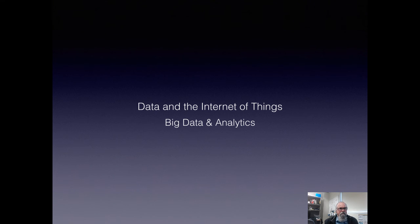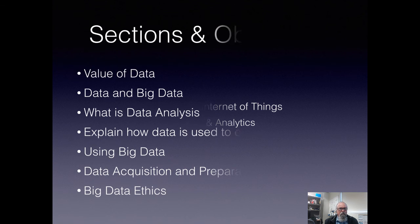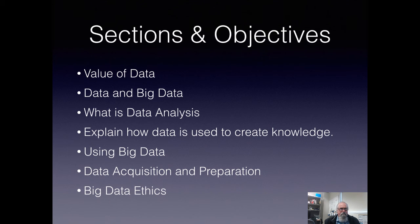Let's have a look at data and the Internet of Things. This is big data and the analytics that go with it. This is a huge area that we're only going to just touch on. In fact, we at Curtin have two courses: an undergraduate degree in data science and another postgraduate degree in data analytics and predictive analysis. We're going to look at the value of data, what makes up big data, how we analyze it, how data is used to create knowledge, and the acquisition, preparation, and ethics.